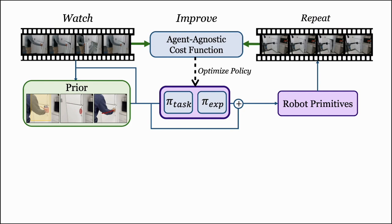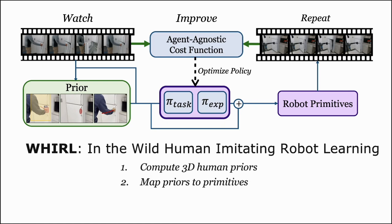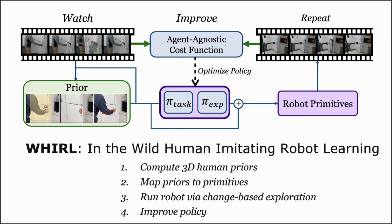We call our approach WORL, or in-the-wild human-imitating robot learning. To summarize, we first extract 3D human behavior priors, project these to the robot's action space, and then execute them in the real world. We use a change-based objective to perform exploration, and then improve the policy using the agent-agnostic cost function and our exploration metric.